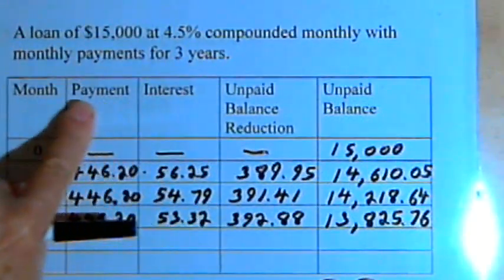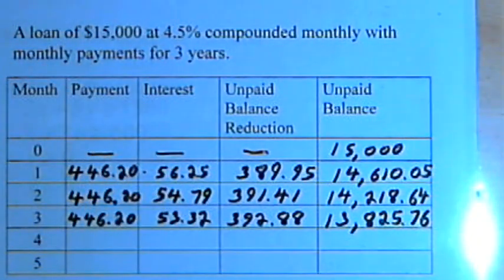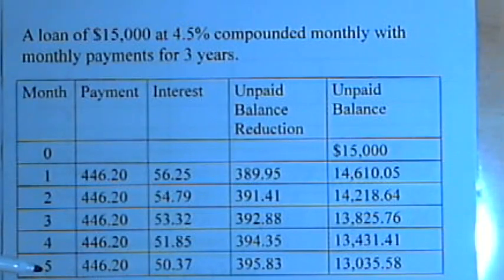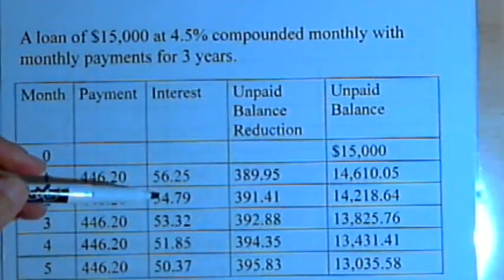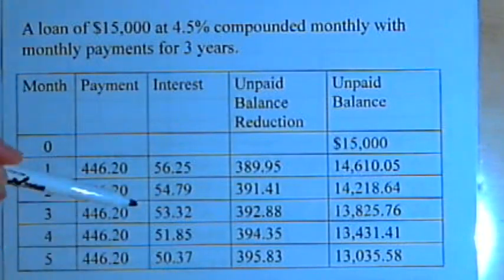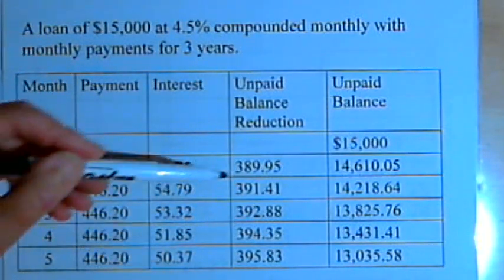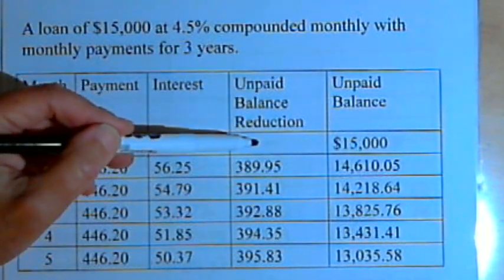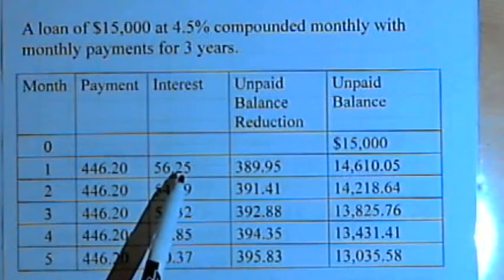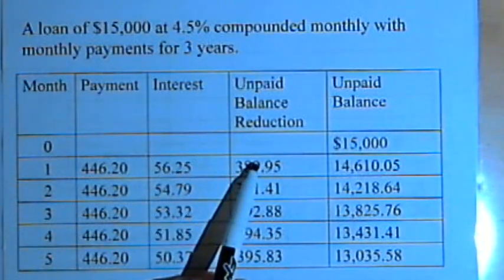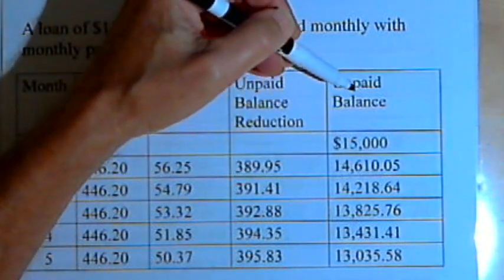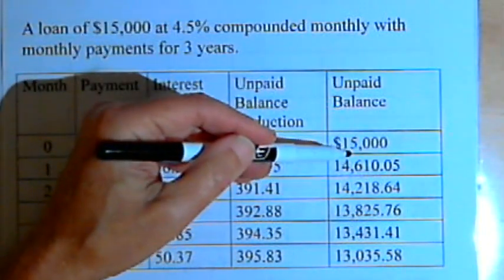Then I would begin again. I've got a nicer version showing the same numbers plus a couple more months. What you should notice is that the numbers in your interest column are getting smaller and smaller as you go further down the schedule. You should also notice that the numbers in the unpaid balance reduction column are getting bigger and bigger. You can verify by adding the interest and the unpaid balance reduction — you should always get the payment amount. The unpaid balance column should also be getting smaller and smaller.